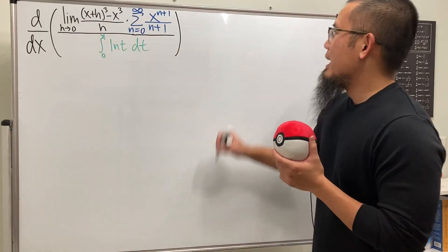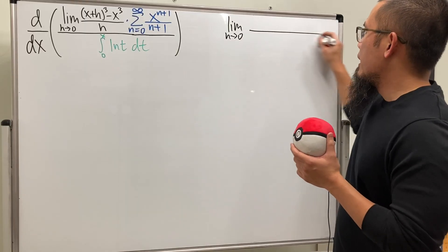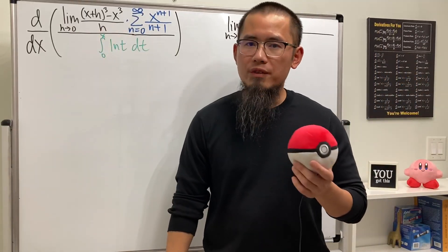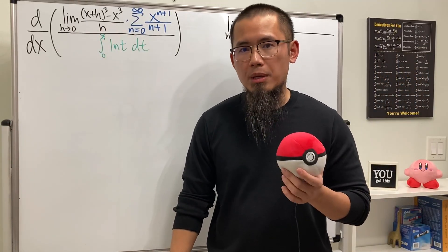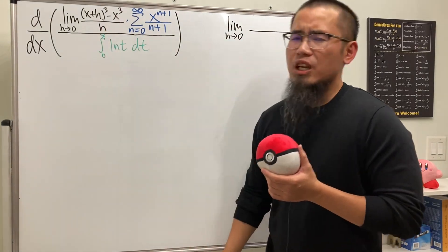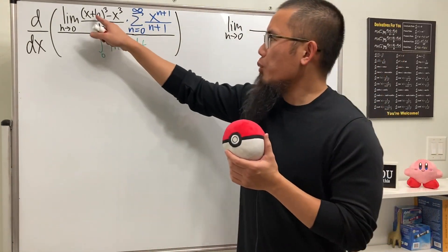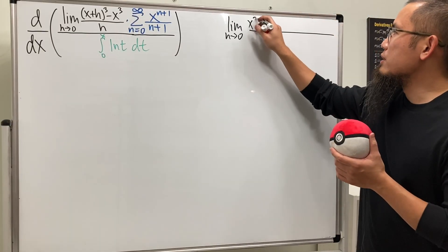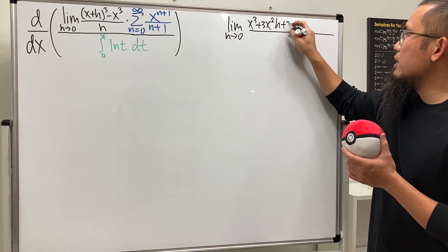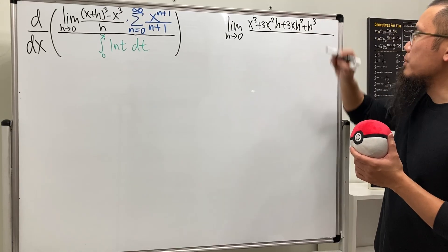Here we have the limit as h approaching zero. This is just the definition of the derivative where the function is x to the third power. But when we do this kind of limit we should really do it algebraically, so let's expand: we get x³ + 3x²h + 3xh² + h³.